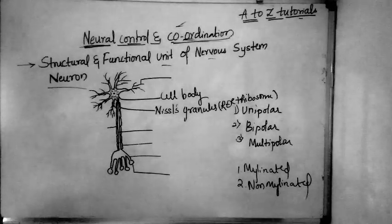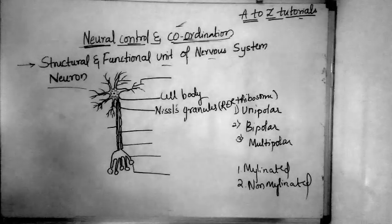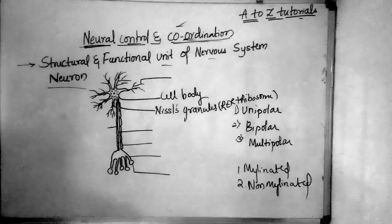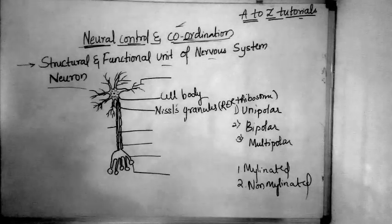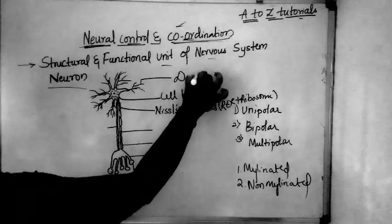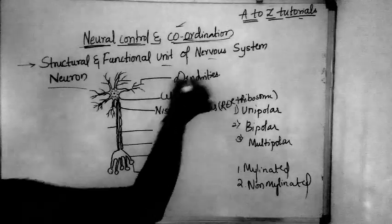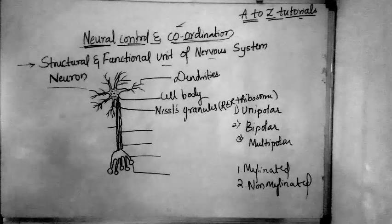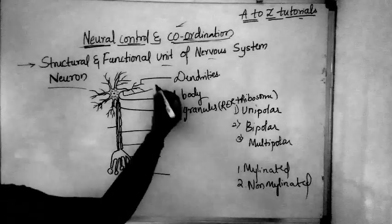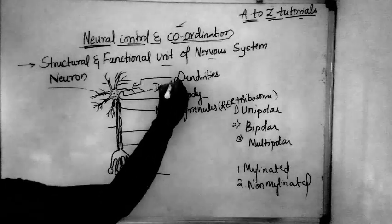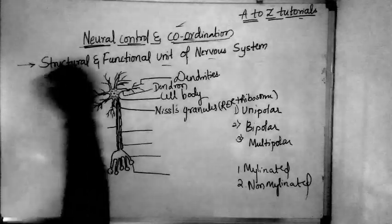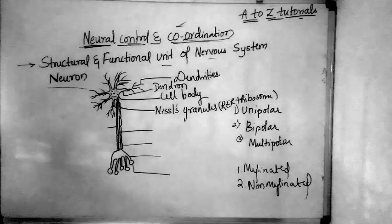The cell body projects out into small short fibers, which we call the dendron. This dendron divides into sub-branches, and those sub-branches of the dendron are called the dendrites.